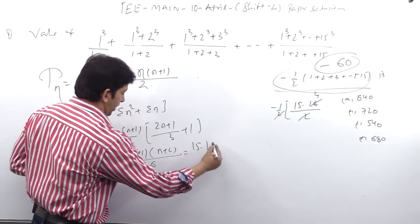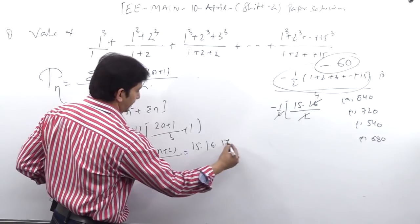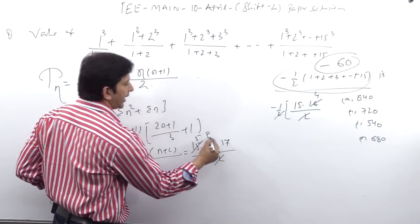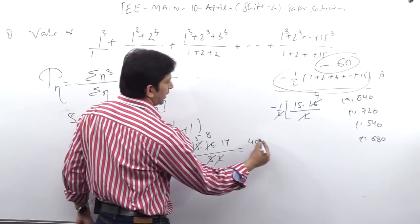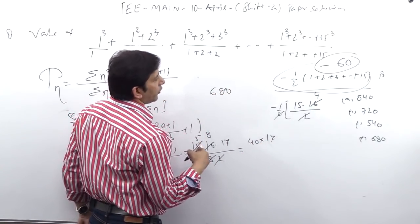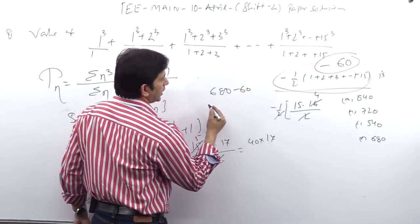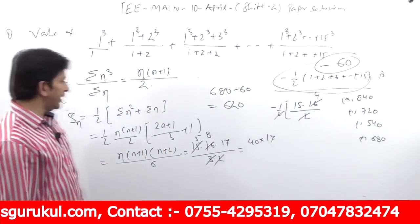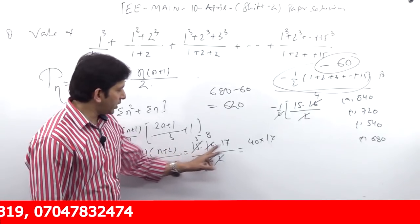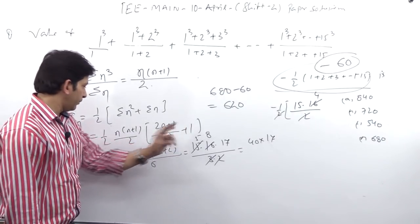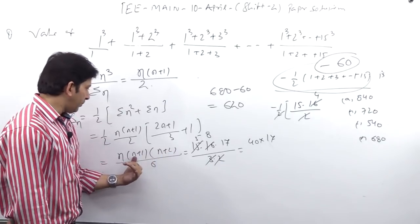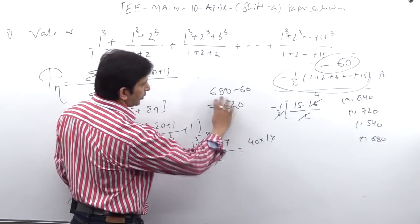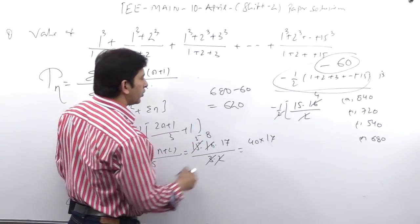Substituting N = 15: S = 15 × 16 × 17 / 6 = 15 × 16 × 17 / 6. Simplifying: 5 cancels with 15 giving 5×2×17 ... computing gives 680. Then 680 - 60 = 620, which is the correct answer.